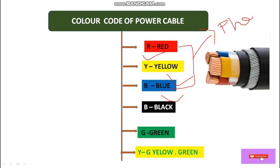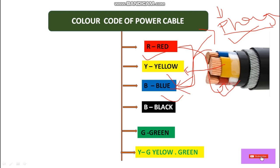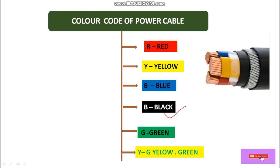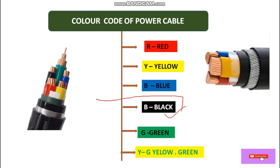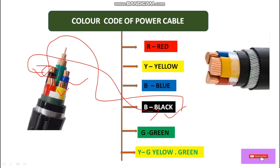Red, yellow, and blue — these three colors are used for phase cables. As you can see here, this is a three core cable: R is red, Y is yellow, and B is blue. These color codes are used for phase wire in a three-phase system. Black is used for the neutral wire.